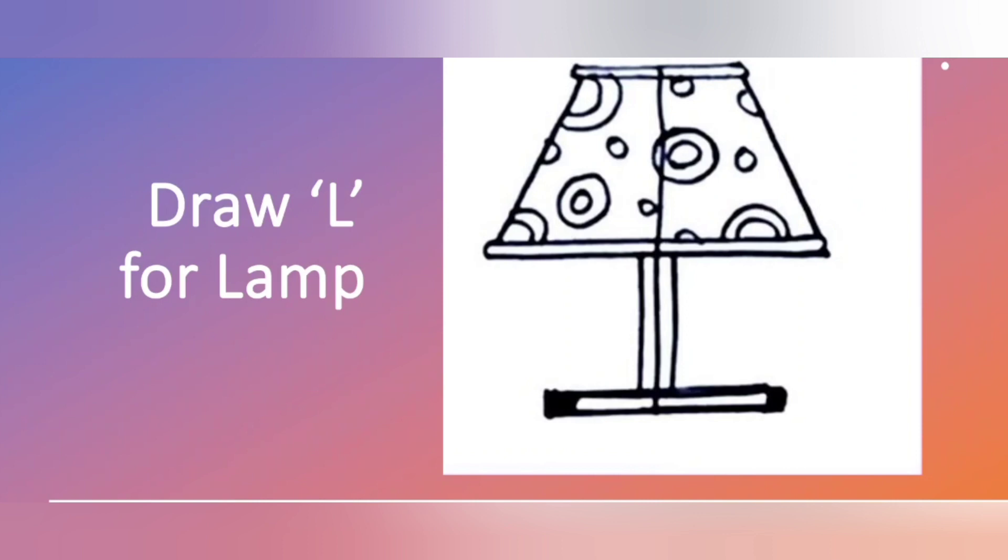Draw L for lamp with capital letter L. We will see how to draw the lamp. It's very easy. Observe and you can write later. So, first what we have to write? We have to write the capital letter L. Below it again write another capital letter L. It's very easy. So, this will be like a stand.